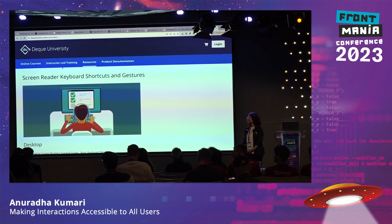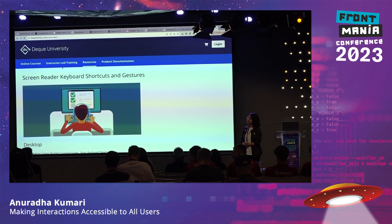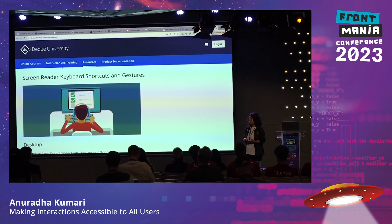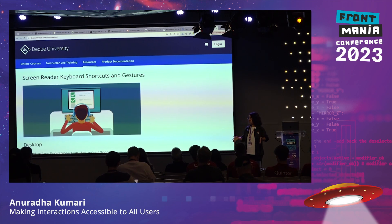Question about visually hidden span versus aria-label: There is no visual difference, but the key benefit is with internationalization. If you use aria-label and the page gets translated — say from English to Dutch — there might be issues with translation. But since visually hidden uses normal text in the DOM, it gets translated just like any other text on the page.